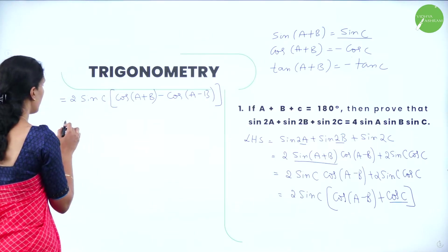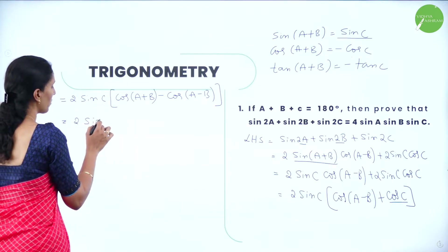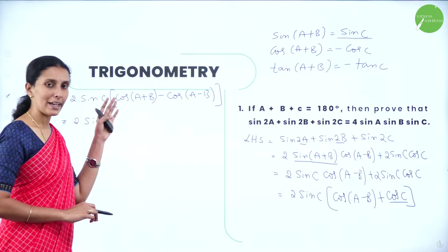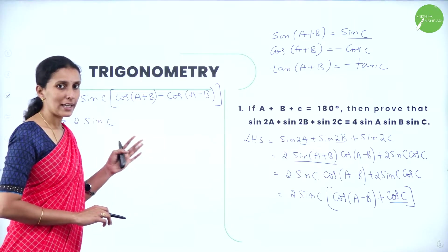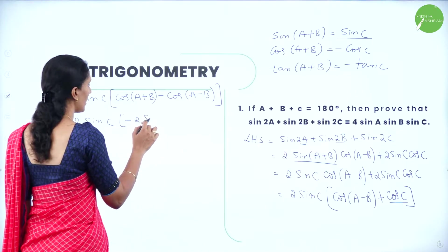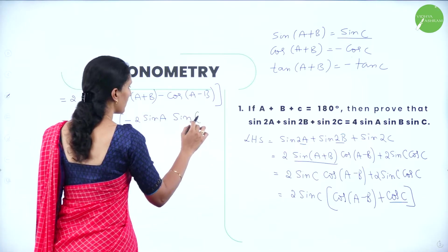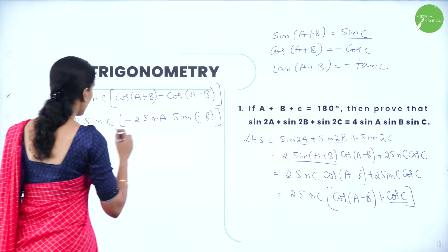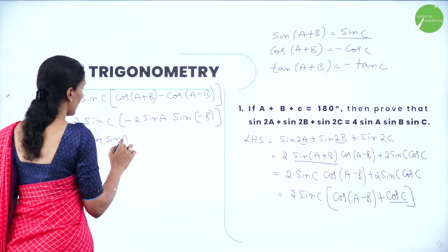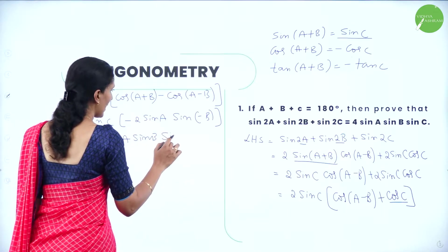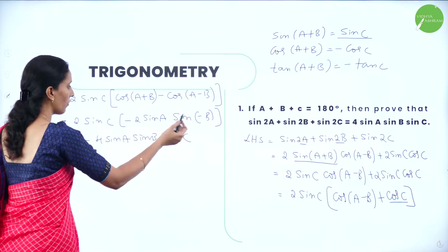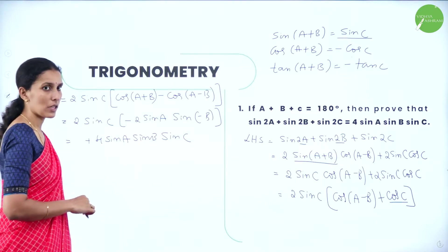So we get 2sinC·[cos(A−B) − cos(A+B)]. Using the transformation formula, cos(A+B) − cos(A−B) = −2sinA·sinB, so cos(A−B) − cos(A+B) = 2sinA·sinB. Multiplying: 2sinC × 2sinA·sinB = 4sinA·sinB·sinC.